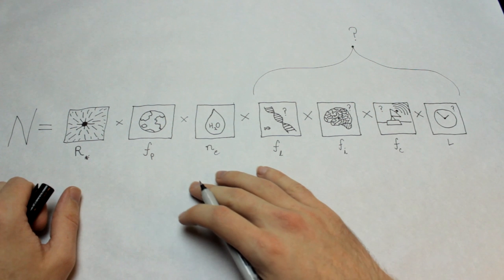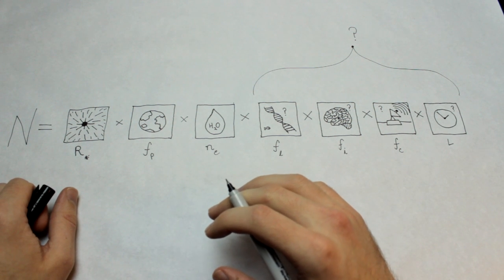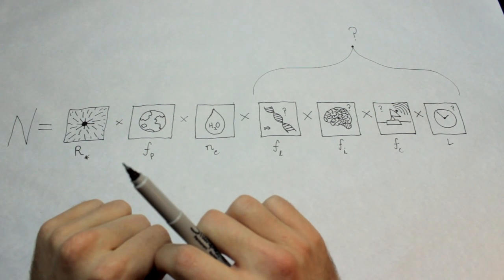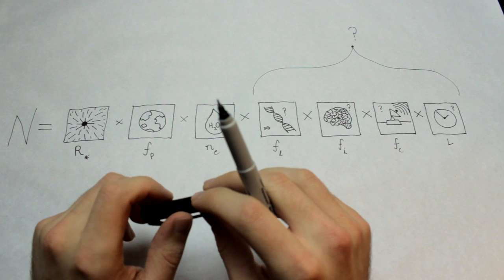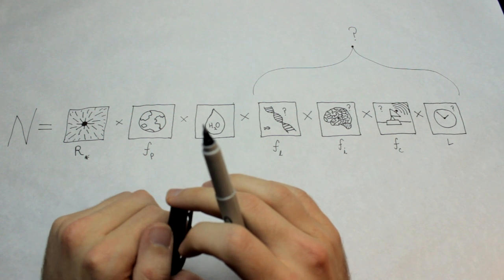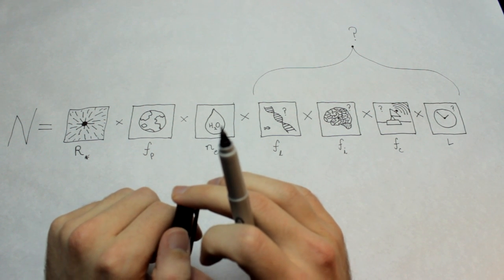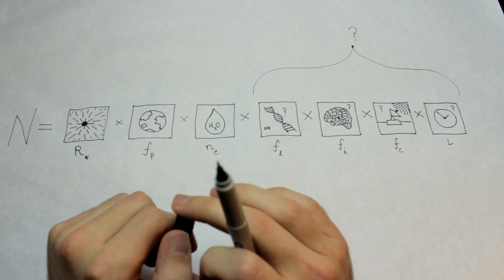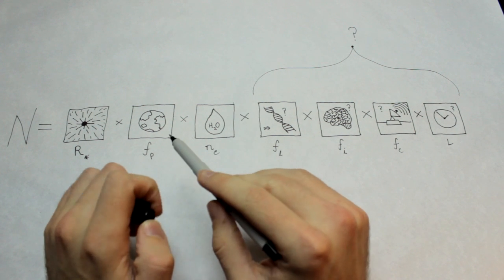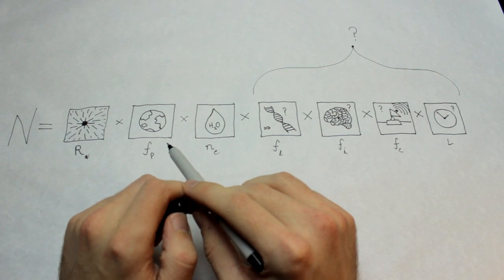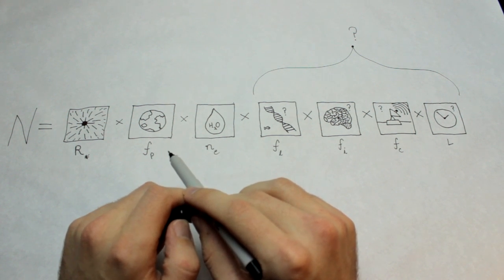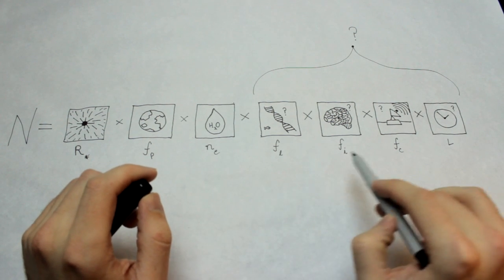So this is the Drake Equation. And like I said, this is used to estimate the number of civilizations in our galaxy that we might be able to communicate with. It's not really used to solve anything because there are so many unknowns and we make a lot of assumptions about a lot of these variables.